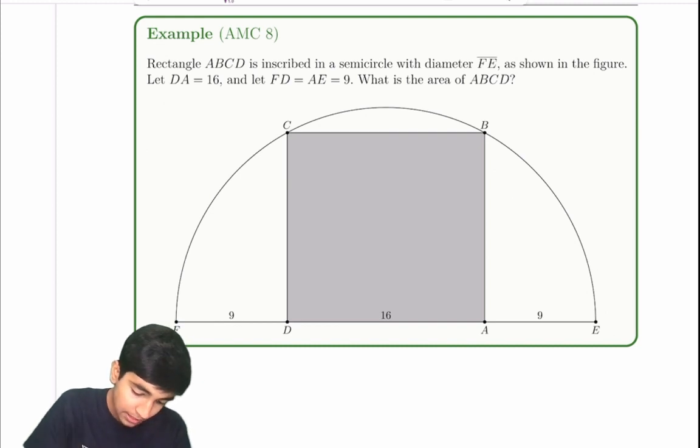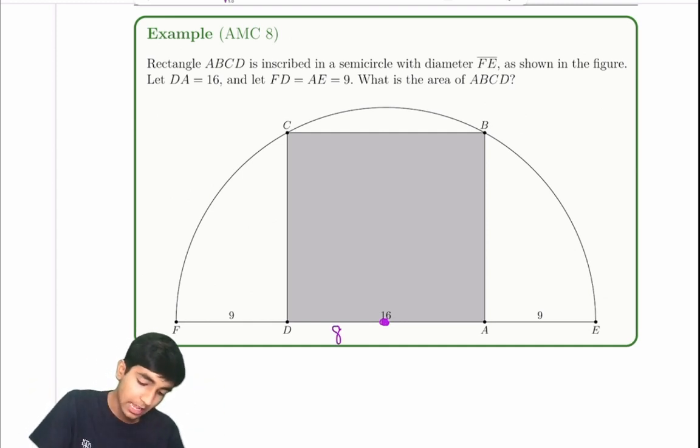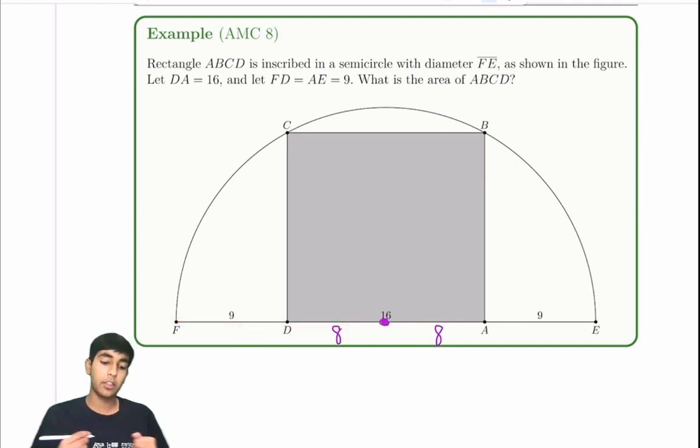So let's take the center of the semicircle. It's going to be at the midpoint there. And notice we can break up the 16 into two parts, 8 and 8. And then we can see this is going to be 17, right? The total length. So the reason we're trying to draw the center in is because the center is where all radiuses are emitted from.